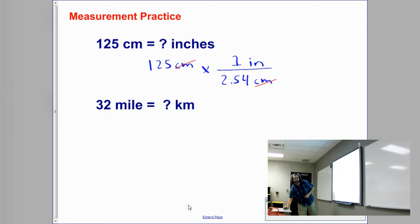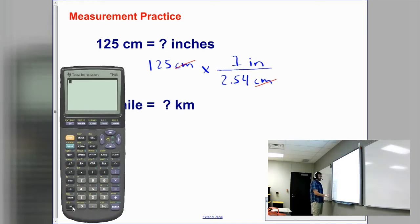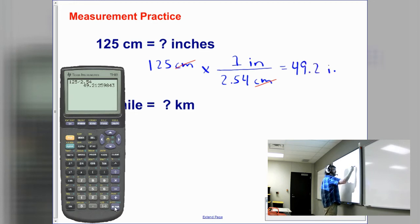I get my calculator out. I'm going to do 125 divided by 2.54. It gives me an answer of 49.2. And the only unit that's left, 49.2 is inches because centimeters canceled out. So that gives me a value of 49.2 inches. And that would be the correct answer.